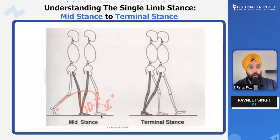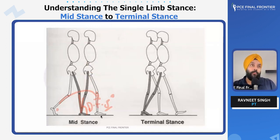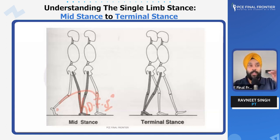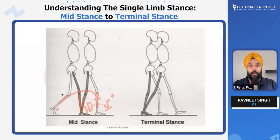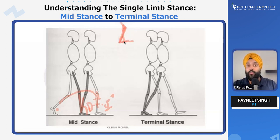Now for those of you who find it hard to visualize closed chain activities — I'm assuming you're standing right now. From loading response, go to the single limb stance and keep the other leg to the side. Try to squat down. If this is your foot, this is your knee, this is your femur — this is how you squat down, where you have slight knee flexion and slight anterior translation of the tibia over the foot.